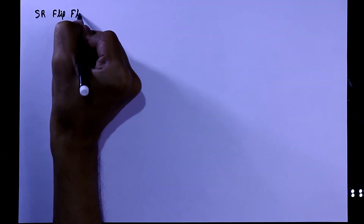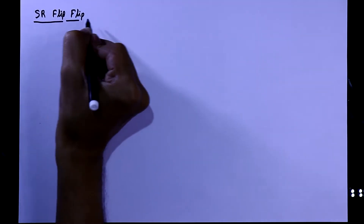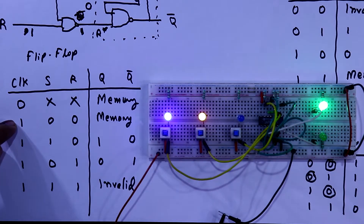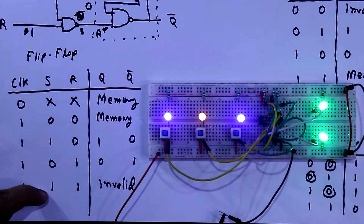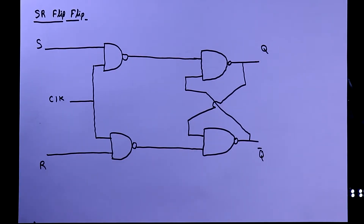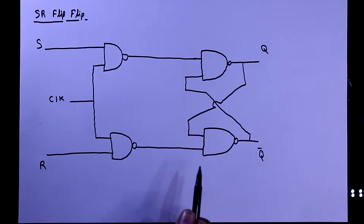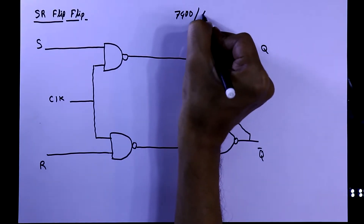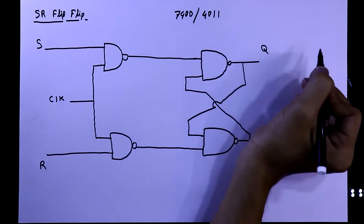In the last video we have seen SR flip-flop. In this video we are going to see a practical on this. To do this we'll use NAND gate IC. This is the SR flip-flop — as it needs NAND gates, we'll use NAND gate IC 7400 or 4011.